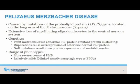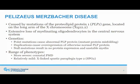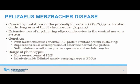Pelizaeus-Merzbacher disease is caused by mutations of the proteolipid protein 1 gene located on the long arm of the X chromosome. It causes extensive loss of myelinating oligodendrocytes in the central nervous system. There are multiple genetic mutations of PLP1, including point mutations causing abnormal PLP protein, duplications that result in overexpression of the otherwise normal protein, and null mutations which result in no protein expression.